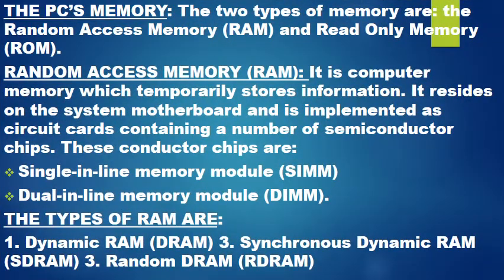The PC's memory has two types: Random Access Memory (RAM) and Read-Only Memory (ROM). RAM is computer memory which temporarily stores information. It resides on the system motherboard and is implemented as circuit cards containing a number of semiconductor chips. These chips are: Single Inline Memory Module (SIMM) and Dual Inline Memory Module (DIMM).